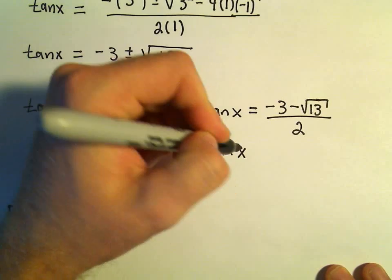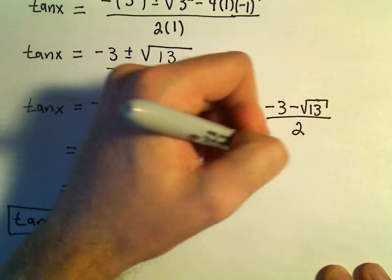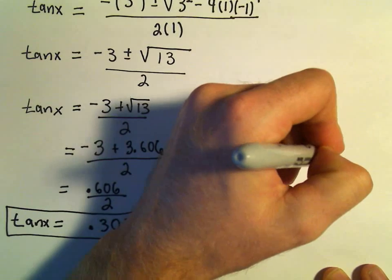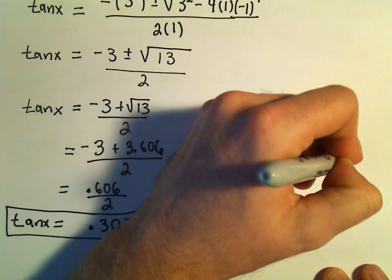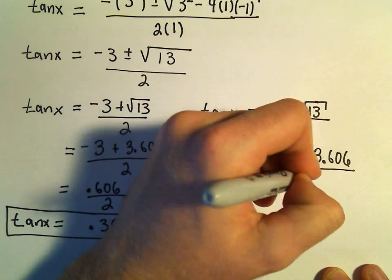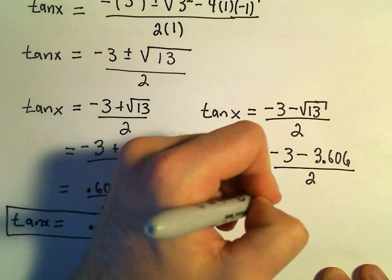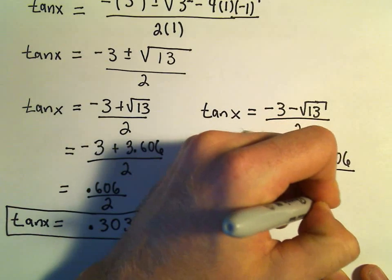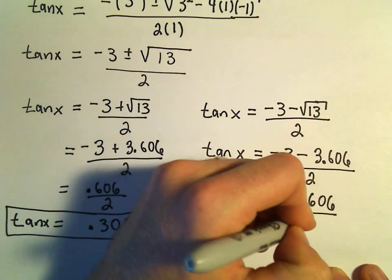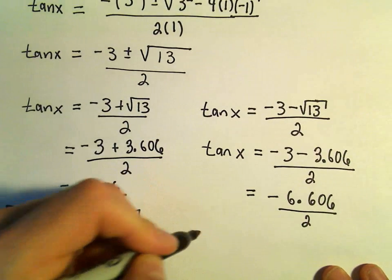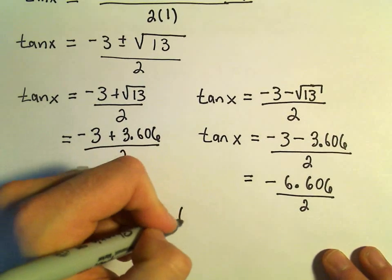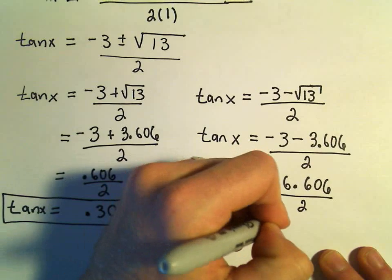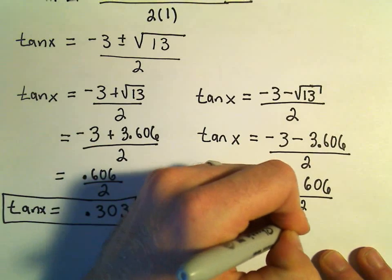For our second equation, tangent x equals negative 3 minus 3.606, all over 2. That's negative 6.606 over 2, which gives us tangent x equals approximately negative 3.303.